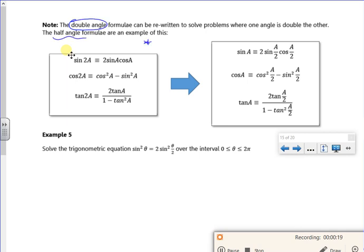So all I've done is I've replaced 2A with A. So that means that A becomes A over 2. And that's exactly what's happened here. Now I think it's nicer if you have little brackets around these then you know that that's the angle and you can kind of see it a little bit easier.